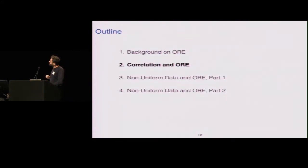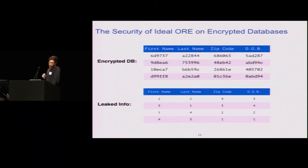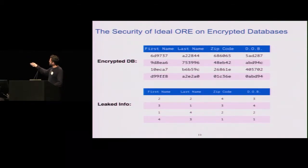The first part of our work is on correlated columns and order-revealing encryption. Let's think about what would happen if you encrypted a database table using ORE with different keys for each column, and generously say we use ideal ORE. The leakage you would get — maybe you encrypt the names of columns and don't actually know what they are — but as an adversary, you look and learn the order of the first names, last names, zip codes, and so on.